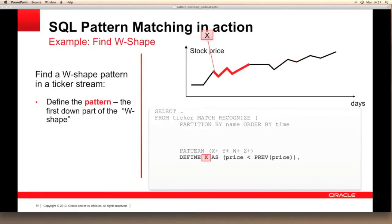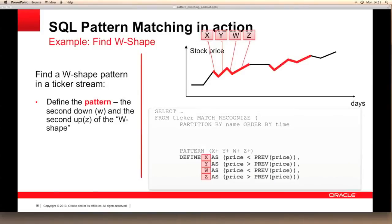Using the define clause, we need to specify what each of the four patterns is. In this case, X is an event where the price is less than the previous price, and this is the first leg of our W-shape as shown in the graph. Y is defined as an event where the price is greater than the previous price. And finally, W and Z simply repeat the first two patterns to complete the W-shape as shown here. So now we've created the pattern and defined the elements within that pattern.